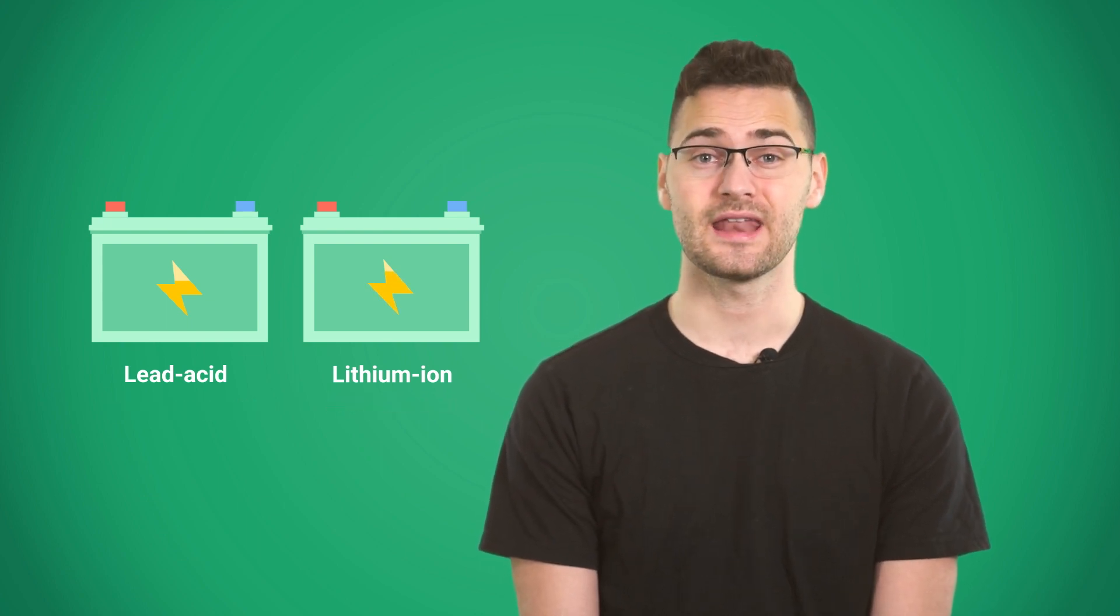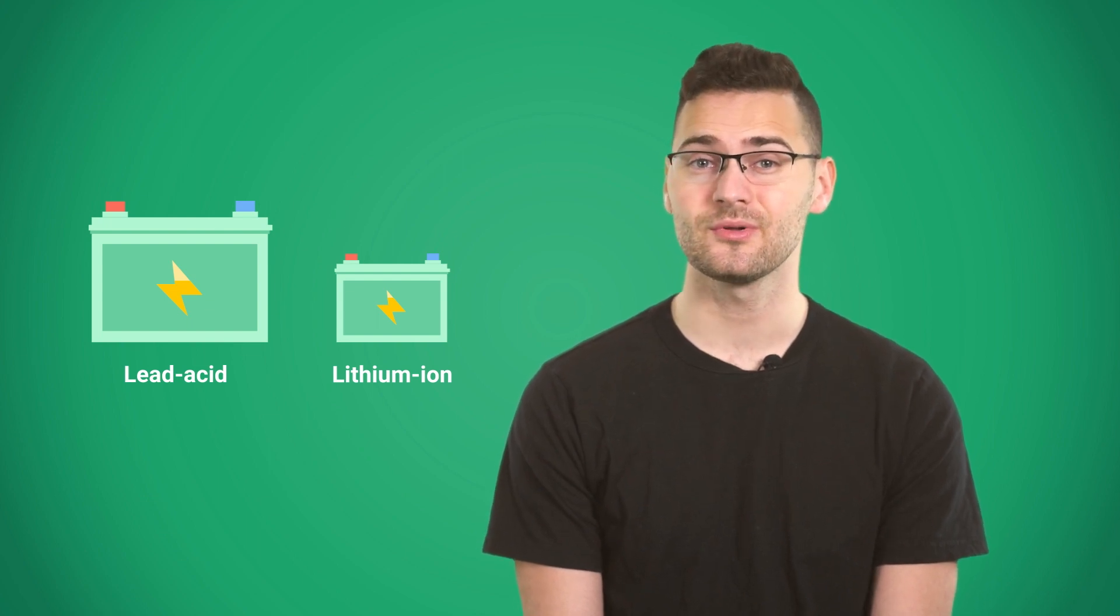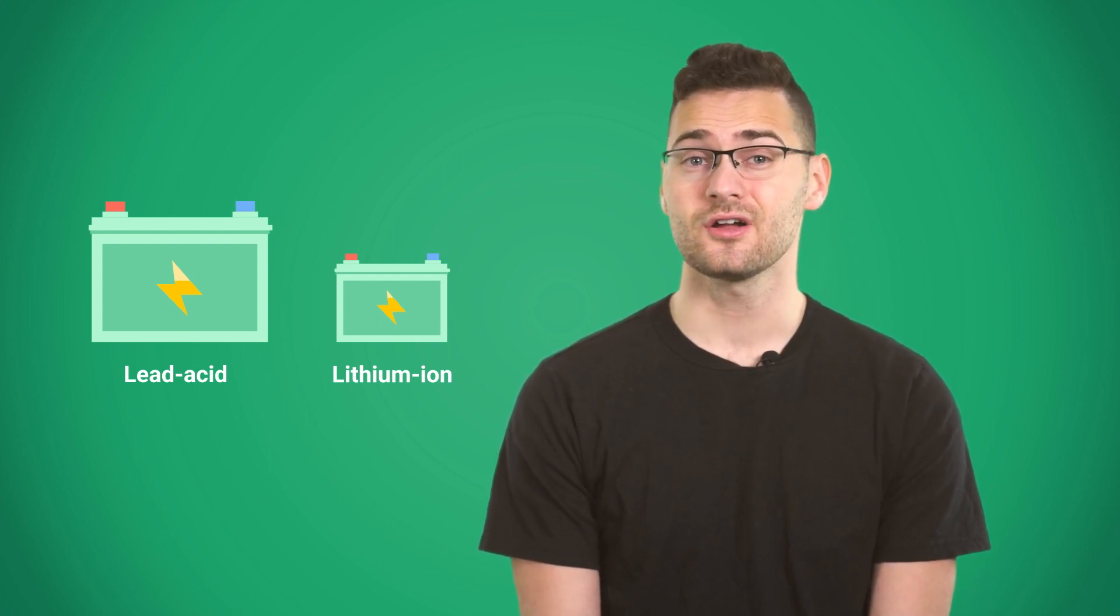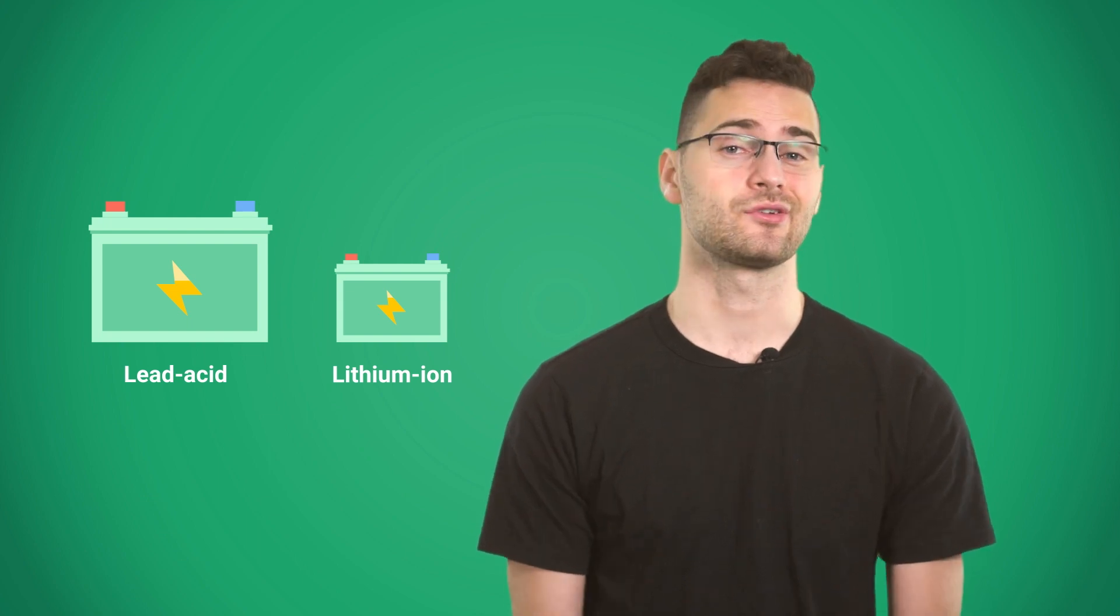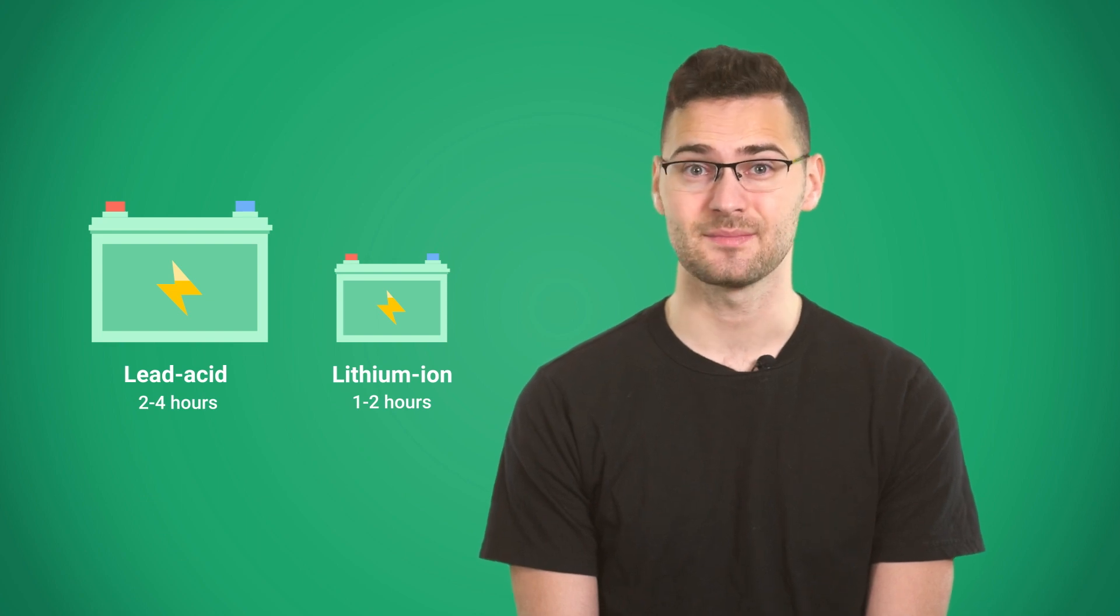A lithium ion battery, on average, occupies 75 percent less space and weighs 75 percent less than a comparable lead acid battery. They are also charged faster. It takes about one to two hours to fully charge a lithium ion battery compared to two to four hours for a lead acid battery.